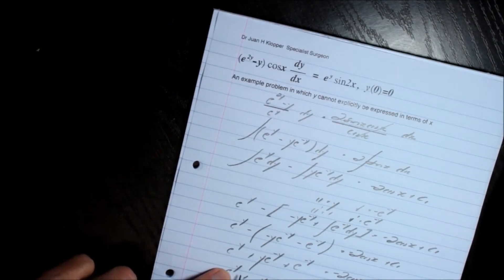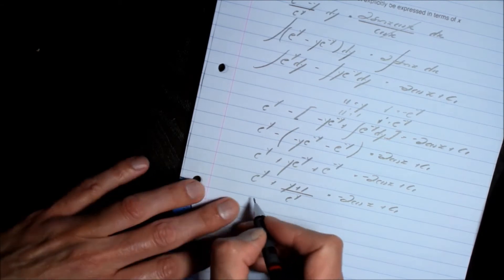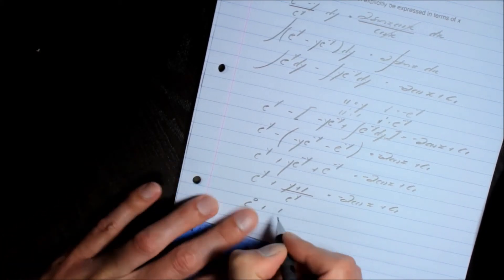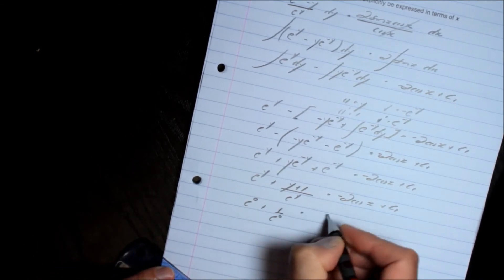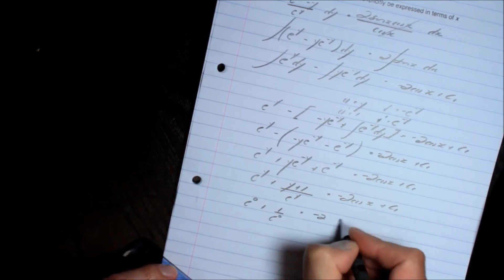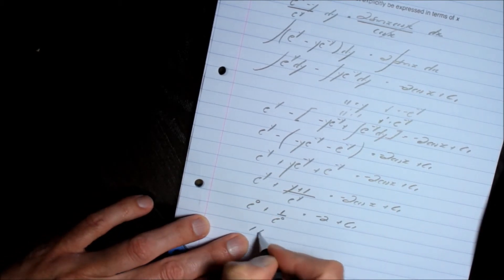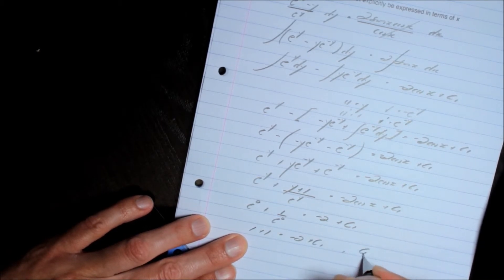But it's an initial value problem. And I can see it would be impossible for me to explicitly get y on its own here. But e^0 plus 1 over e^0 equals -2 cosine of 0 is 1 plus c1. So that's going to be 1 plus 1 equals -2 plus c1. In other words, c1 equals 4.